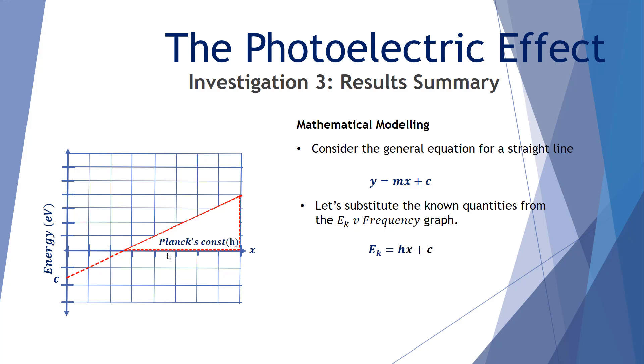x, the x-axis is frequency f. And plus c is the work function. Now, because the work function is below zero on the energy axis, we write it as plus minus the work function. So this is the kinetic energy of our photoelectron. hf is the energy of the incident photon or the light. And the work function is the amount of energy required to release the least bound electron from the metal surface, the metal cathode. Let's simplify that. Ek equals hf take phi. Here's the equation relating all the energies involved with the photoelectric effect.